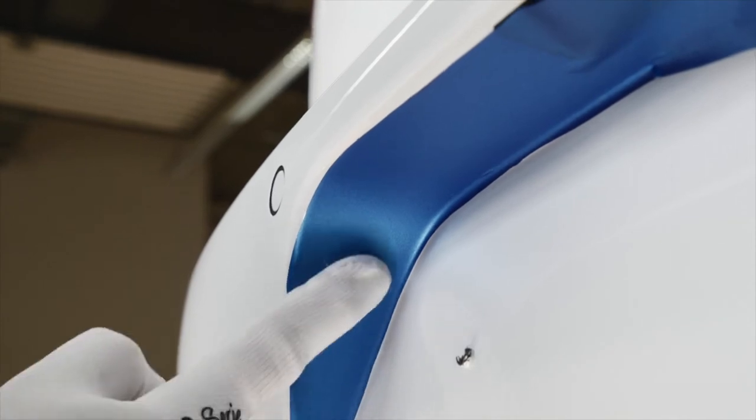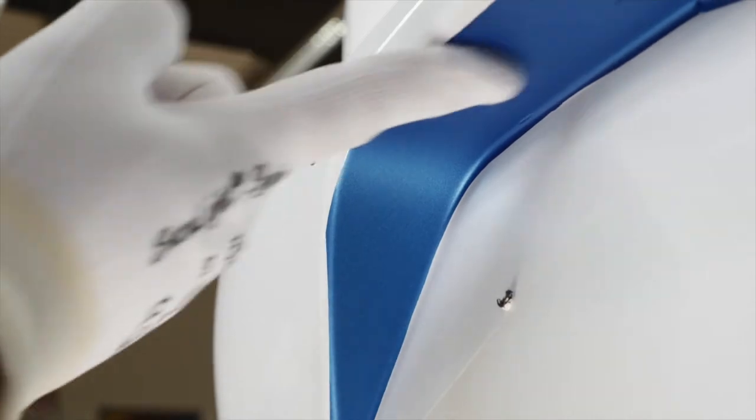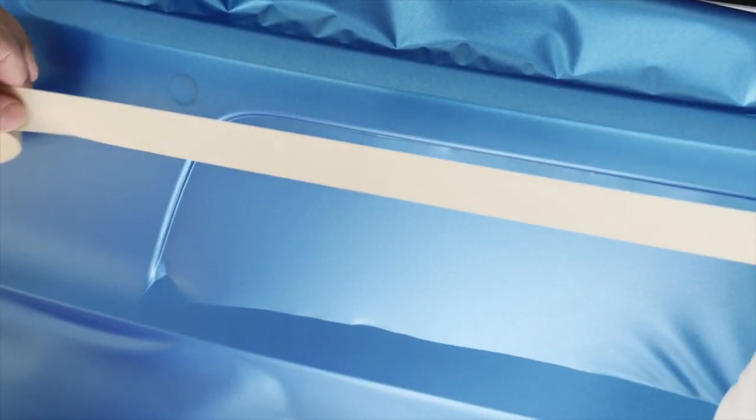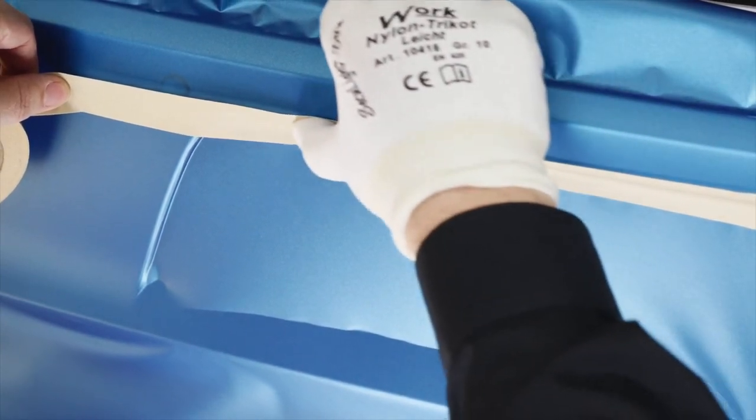After installation of the wrap film to the whole bumper, film needs to be applied to the flat inside area of the recess. Attach Scotch masking tape to the top edge of the film and to the non-recess area of the bumper.